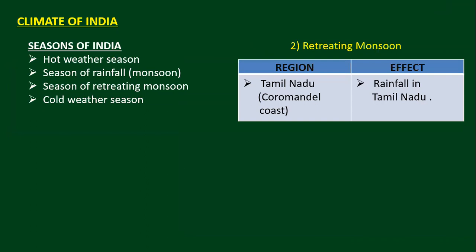In short, there are four seasons in India: the hot weather season, the season of rainfall, the season of retreating monsoon, and the cold weather season. We cannot write 'summer' or 'winter' — we have to follow these specific names.